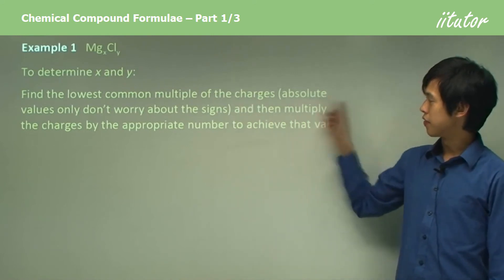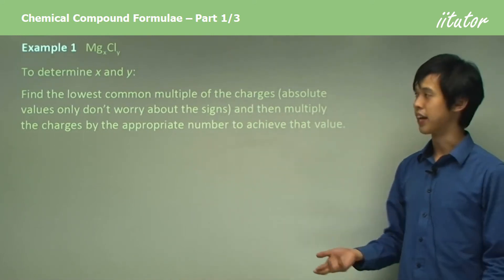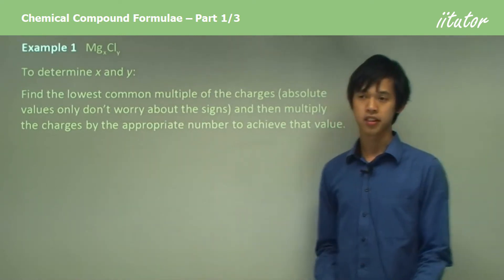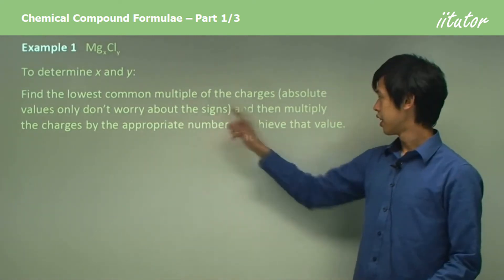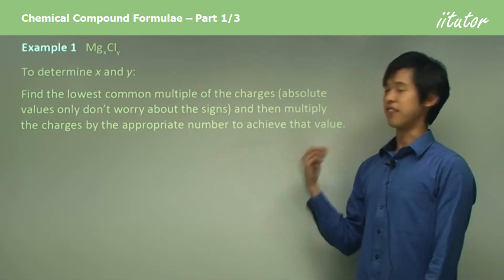To work out x and y, we find the lowest common multiple of the charges in terms of absolute value, so don't worry about the signs. For instance, chlorine is negative one but we're just going to say one at this point. Then multiply the charges by the appropriate number to achieve that value.